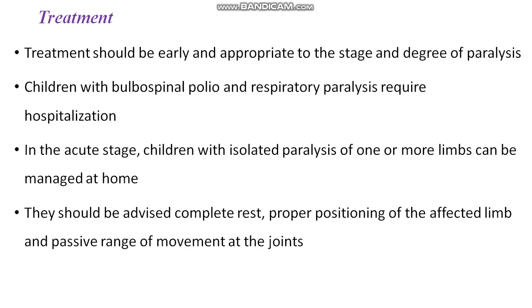Coming to the treatment of polio. The treatment should be started as early as possible. It should be appropriate to the stage as well as the degree of paralysis. Children who are suspected to have bulbospinal polio or any kind of respiratory paralysis require hospitalization as well as ventilation. In the acute phase, children with isolated paralysis of one or more limbs can be managed at home. They should be advised to have complete bed rest, proper positioning of the affected limb, and passive range of movement exercises.